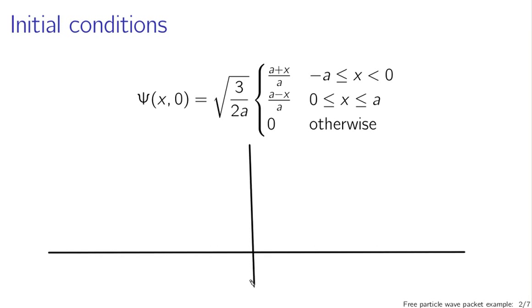What this actually looks like is from, say, minus a to a, our wave function is a triangle. And outside of those regions, our wave function is zero.